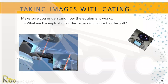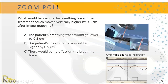An important consideration about the equipment: the camera is mounted on the wall in a stationary position. We set the patient up based on their tattoos and position on the table. So what happens to the breathing trace if the treatment couch is moved vertically higher by half a centimeter after image matching?